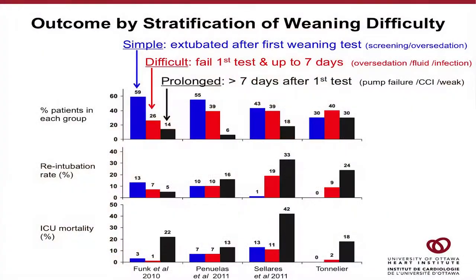In 2010, there was an expert consensus panel that came up with basic definitions of weaning difficulty. There are patients who are weaned simply and extubated after a first weaning test. In fact, the vast majority of patients on ventilators are weaned easily — 60% in these four observational trials across various types of ICUs, maybe up to 75% in the real world. The barriers here seem to be screening and over-sedation.